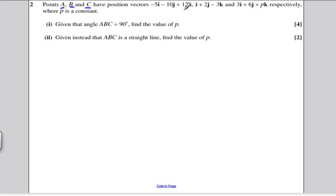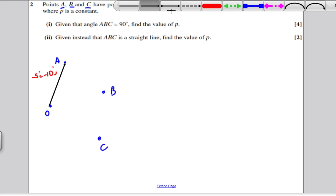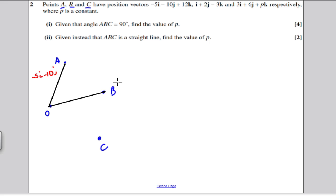It says that you've got points A, B and C with these position vectors. That, that and that - that means relative to the origin. It says given that angle ABC is 90 degrees, find the value of P. I'm going to draw a picture straight away with this just to make sure I have everything in my head appropriately.